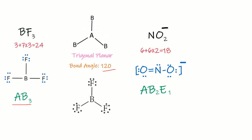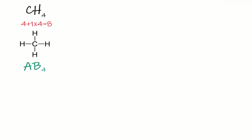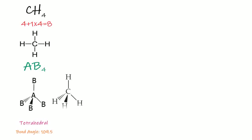For the nitrite ion, its type is AB₂E₁. Any molecule, ion, or radical species with AB₂E₁ type will have a V-shape or bent geometry. For CH₄, it is AB₄, so any molecule with AB₄ type is tetrahedral, and the bond angle between atoms is 109.5°.